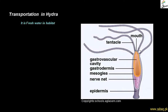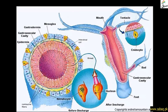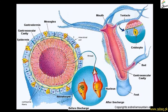Looking at the structures of hydra, we can see the tentacles and the mouth are present. There is a gastro-vascular cavity. The outer layer is the epidermis, with a simple nerve net present, and the inner layer is the gastrodermis. Between them is the mesoglea. The outer layer is called ectoderm and the inner layer is called endoderm.